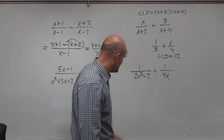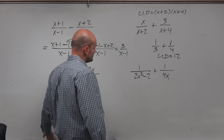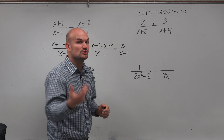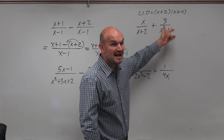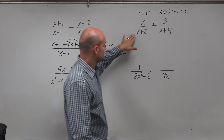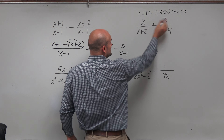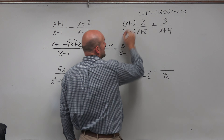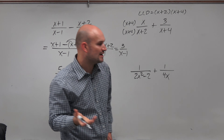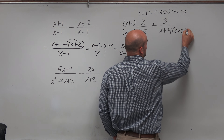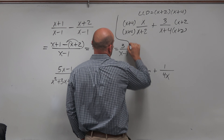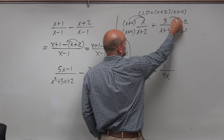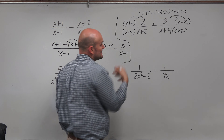Since we don't have a common denominator, we need to figure out which factor to multiply each fraction by to obtain the common denominator. On the left side, we already have x plus 2, so we need to multiply top and bottom by (x plus 4). On the right side, we multiply top and bottom by (x plus 2) to create equivalent fractions. Applying the distributive property, our denominators are now the same.